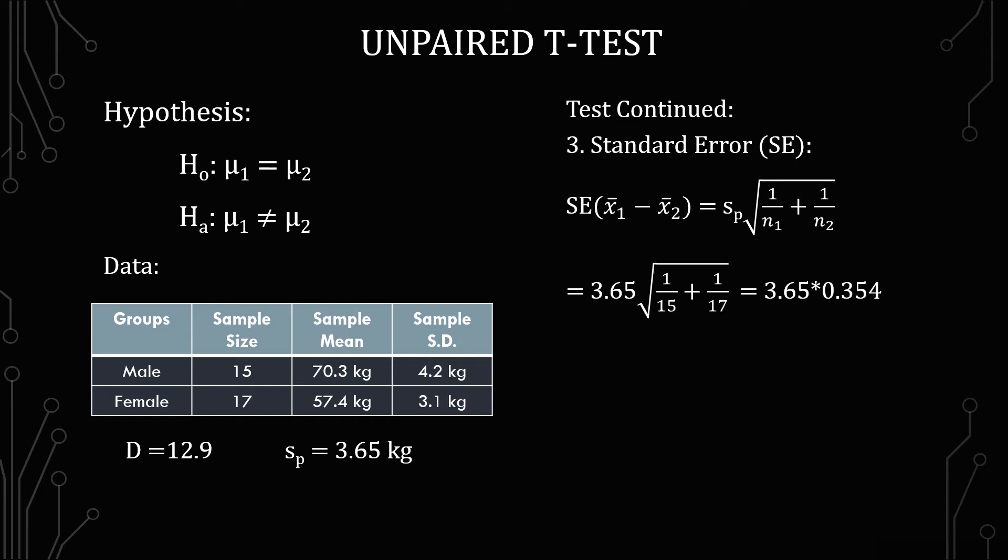So we end up with 3.65 times the square root of 1 over 15 plus 1 over 17 which equals 3.65 times 0.354. This yields 1.293 kilograms.